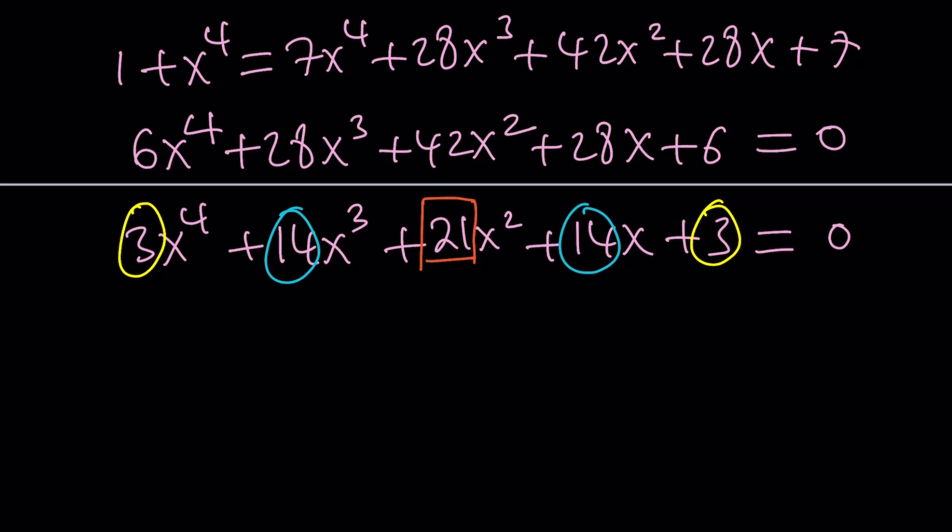I guess symmetric is a better word here. So what happens is we can go ahead and divide everything by x squared, which is this term in the middle, by the way. If you divide everything by x squared, you're going to get 3x squared. Let me write it down here.